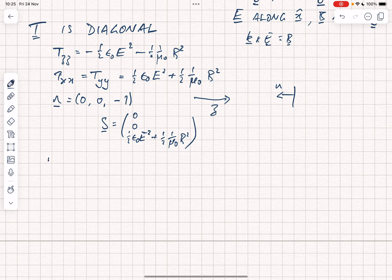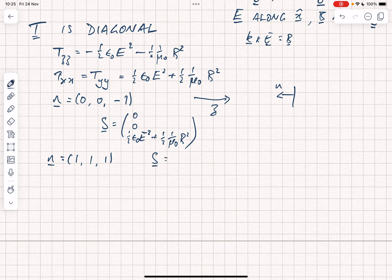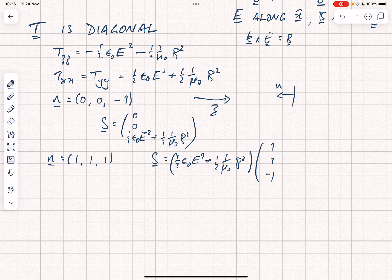So that's maybe not quite so interesting. What about a situation where N is equal to 1, 1, 1? Well, in that case, the stress is written as follows. I'm going to take the pre-factor outside. So we've got a half epsilon naught E squared plus a half one over mu naught B squared in brackets, and that's going to act on the vector 1, 1, minus 1.